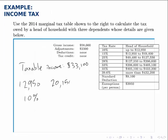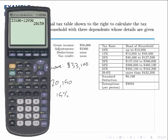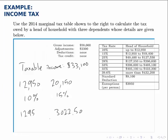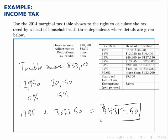So $20,150 gets taxed at 15%. From the first bracket we multiply $12,950 times 10% and find that's $1,295. For the second bracket we multiply $20,150 times 0.15 and find that the tax from that bracket is $3,022.50. Adding those two together, the total tax owed is $4,317.50. Since there are no tax credits, we're done — that's our final answer.